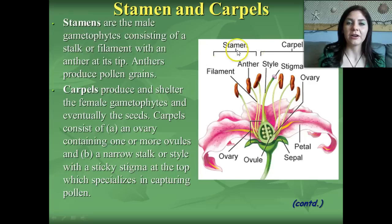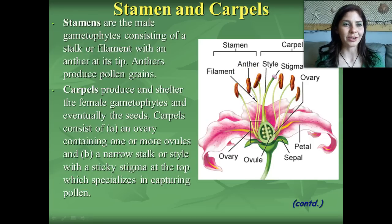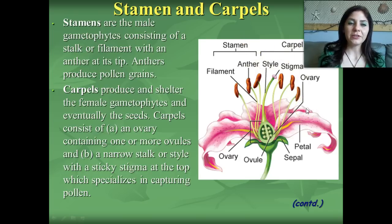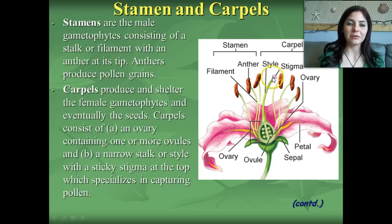Stamens are collectively the male portions of the plant. They consist of an anther held up by a stalk, and on the anther you'll find pollen, or plant sperm. Carpels produce and shelter the female gametophyte. The carpel consists of an ovary containing the eggs, also called ovules or ova, and a narrow stalk called the style with a sticky stigma at the top that is specialized for capturing pollen.